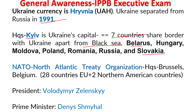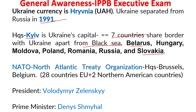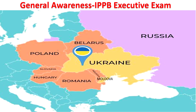President of Ukraine is Volodymyr Zelenskyy; Prime Minister is Denys Shmyhal. The capital Kyiv is situated on the banks of the Dnipro River (D is silent). Operation Ganga was conducted to evacuate Indians from Ukraine; aircraft used was C-17. The Black Sea is located in the south of Ukraine.